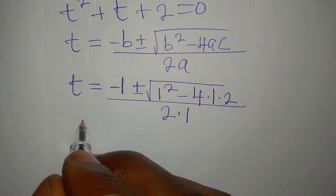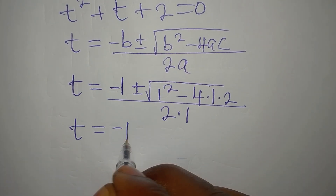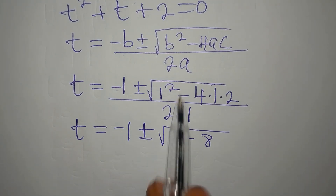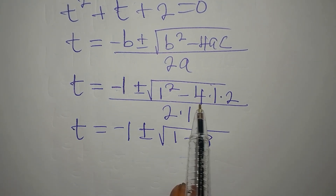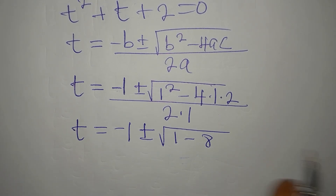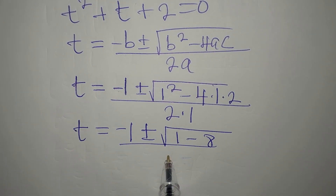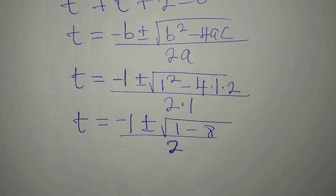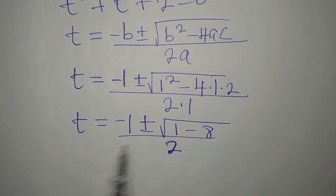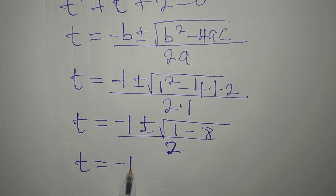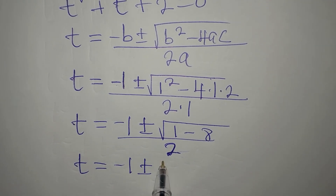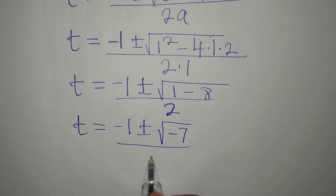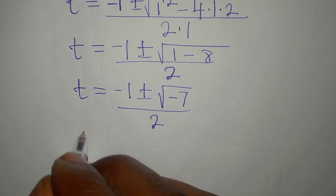So t equals minus 1 plus or minus the square root of 1 minus 8. Since 1 squared is 1 and 4 times 1 times 2 is 8, we get the square root of negative 7, all divided by 2. Simplifying, t equals minus 1 plus or minus the square root of negative 7 over 2.